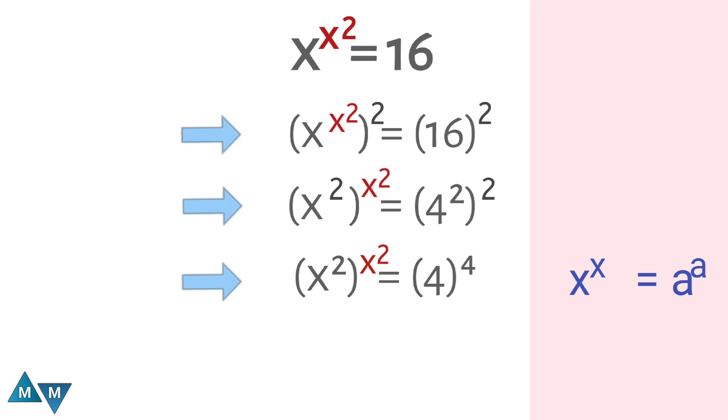By comparing the bases, we get x square equals 4, and x is equal to plus minus under root 4, which is equal to plus minus 2. And that is our final answer.